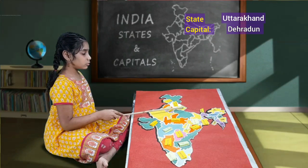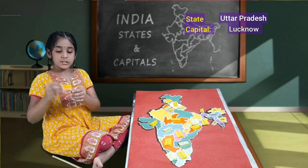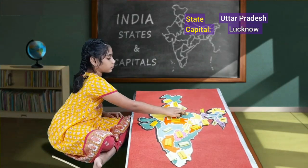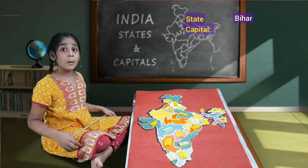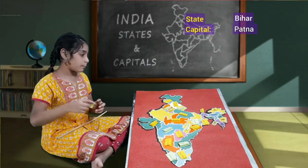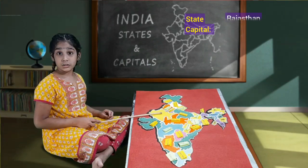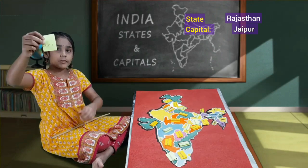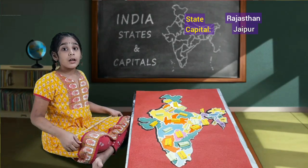Next, below Uttarakhand, we'll have Uttar Pradesh. Uttar Pradesh's capital is Lucknow. This is Uttar Pradesh. If you open this, we'll have Lucknow. And next, we'll have Bihar. Bihar's capital is Patna. This is Bihar. If you open the chart, we'll have Patna as capital. After Bihar, we'll move to Rajasthan. Rajasthan's capital is Jaipur. This is Rajasthan. If you open the chart, we'll have Jaipur. Jaipur is also known as Pink City, and Rajasthan is famous for camels.